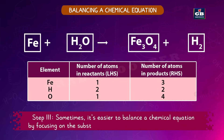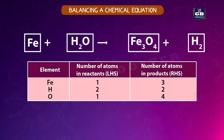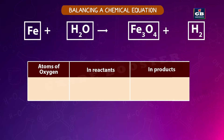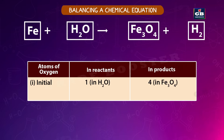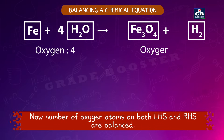Step three: focus on the substance with the maximum number of atoms. Fe₃O₄ has the most oxygen atoms — four on the right-hand side and only one on the left. To balance oxygen, we multiply the coefficient of H₂O by 4, giving 4H₂O on the left. Now the number of oxygen atoms on both sides is balanced.